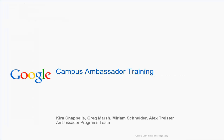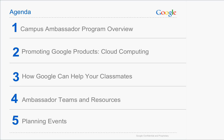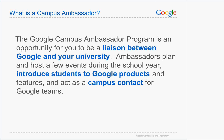I'm going to go ahead and get started. The agenda for today is a program overview, which I will be doing. Then Miriam will be doing information about promoting Google products and how Google can help your classmates. Alex will be covering ambassador teams, resources, and planning events. I'm going to move pretty quickly so we can take advantage of the time and so Miriam and Alex can get to the meat of the information.